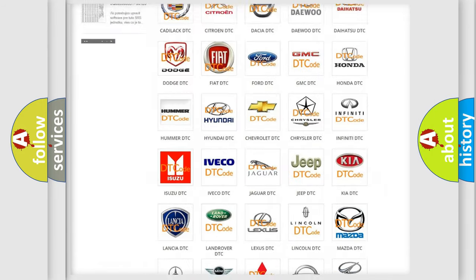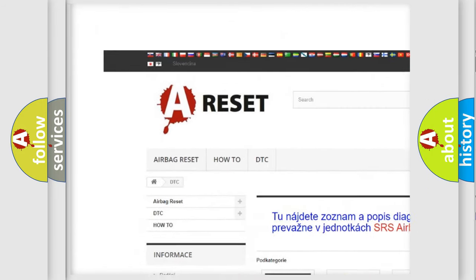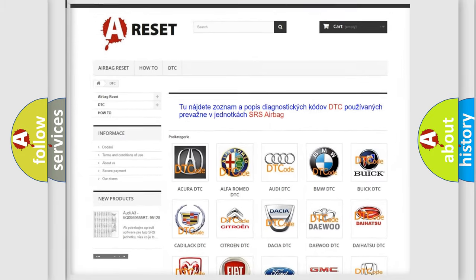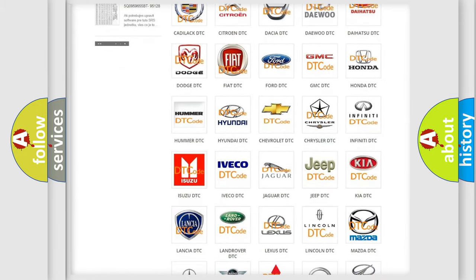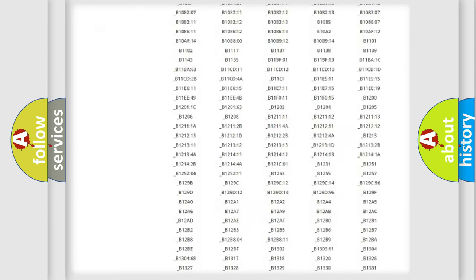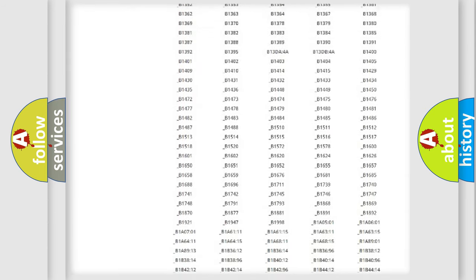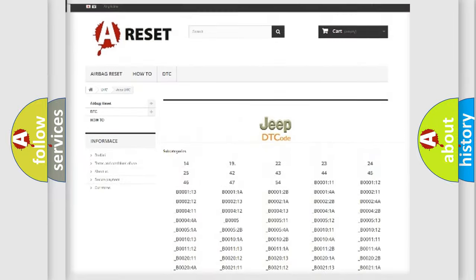Our website airbagrest.sk produces useful videos for you. You do not have to go through the OBD2 protocol anymore to know how to troubleshoot any car breakdown. You will find all the diagnostic codes that can be diagnosed in Jeep vehicles.